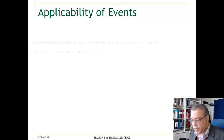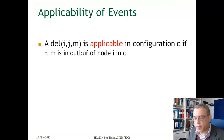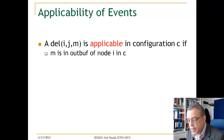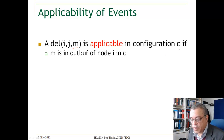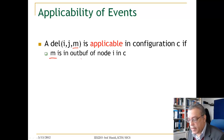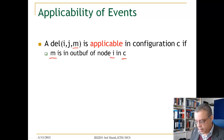For the applicability of delivery events: a delivery event from node I to node J of message M is applicable in configuration C if M is in the output buffer of node I in configuration C.